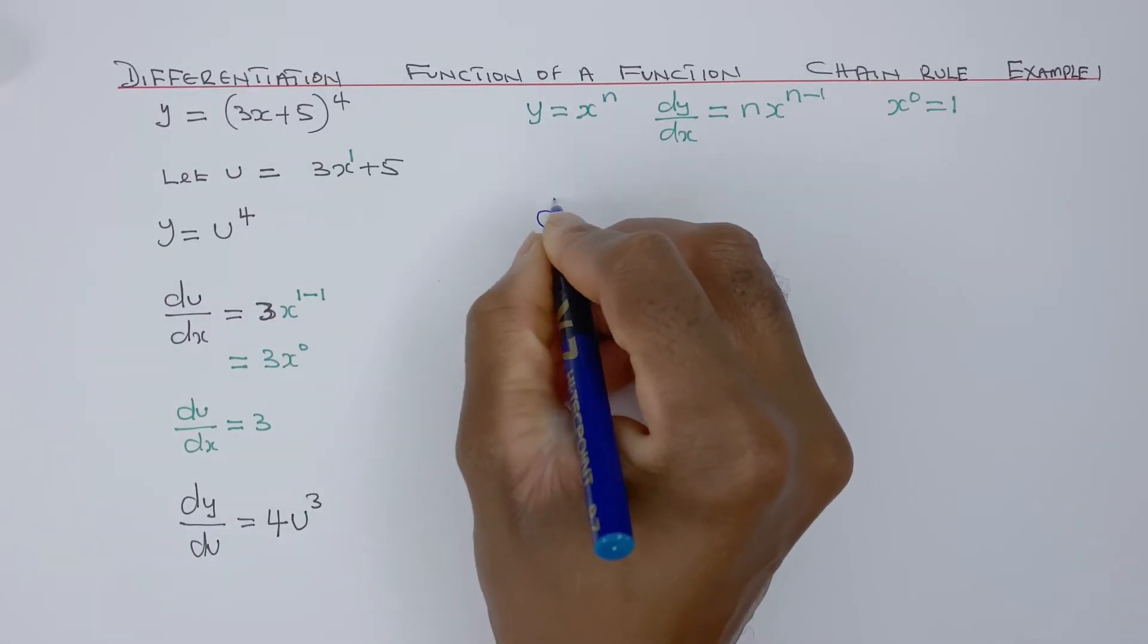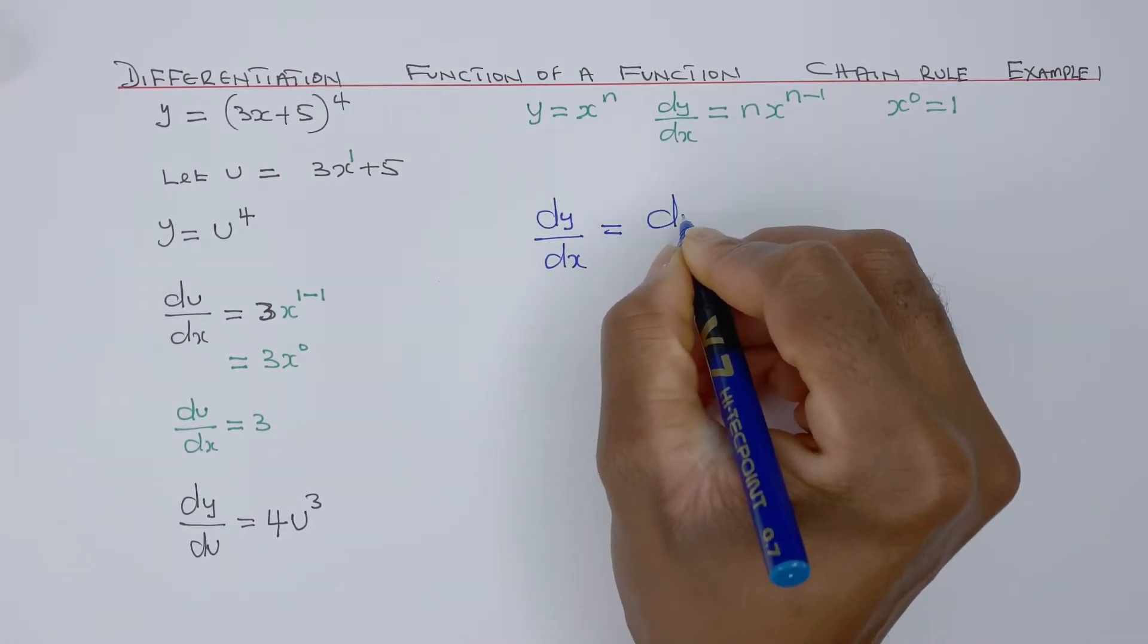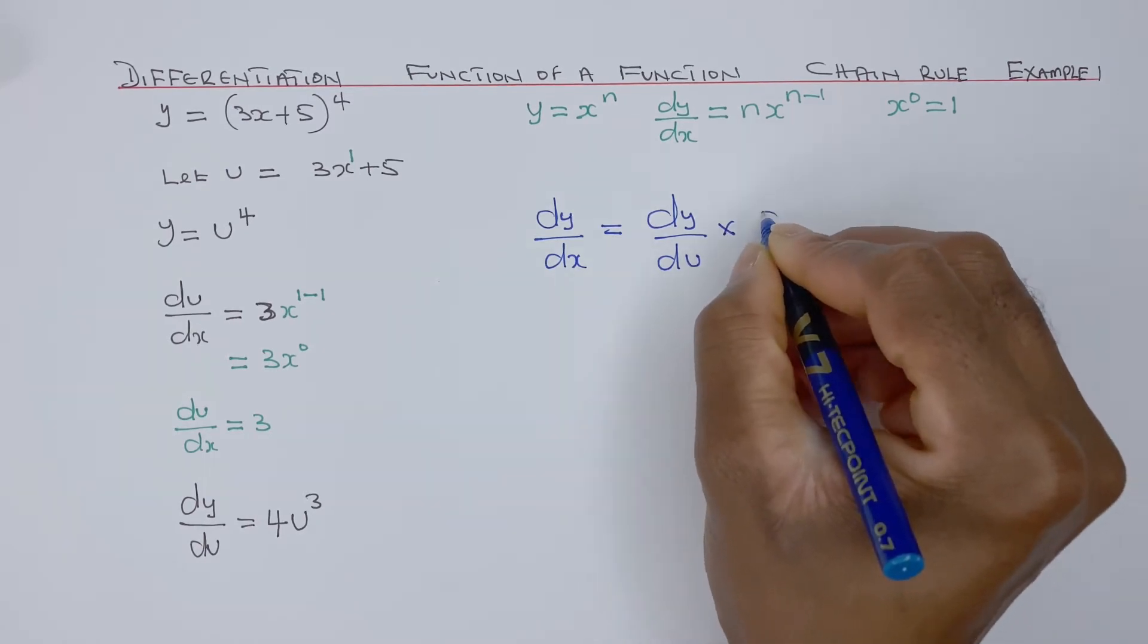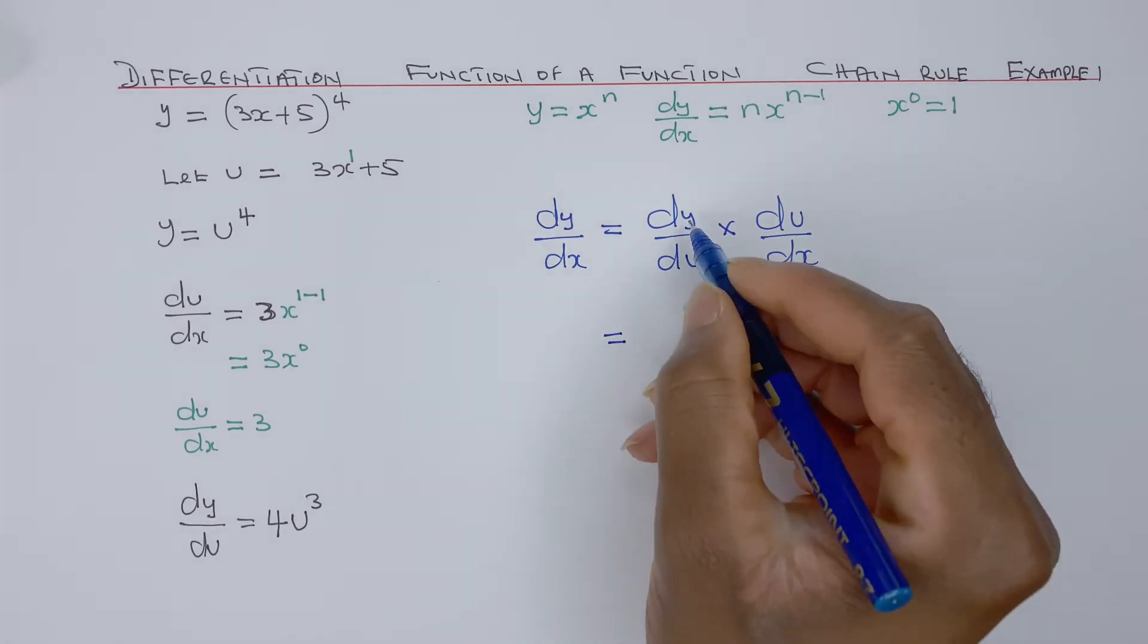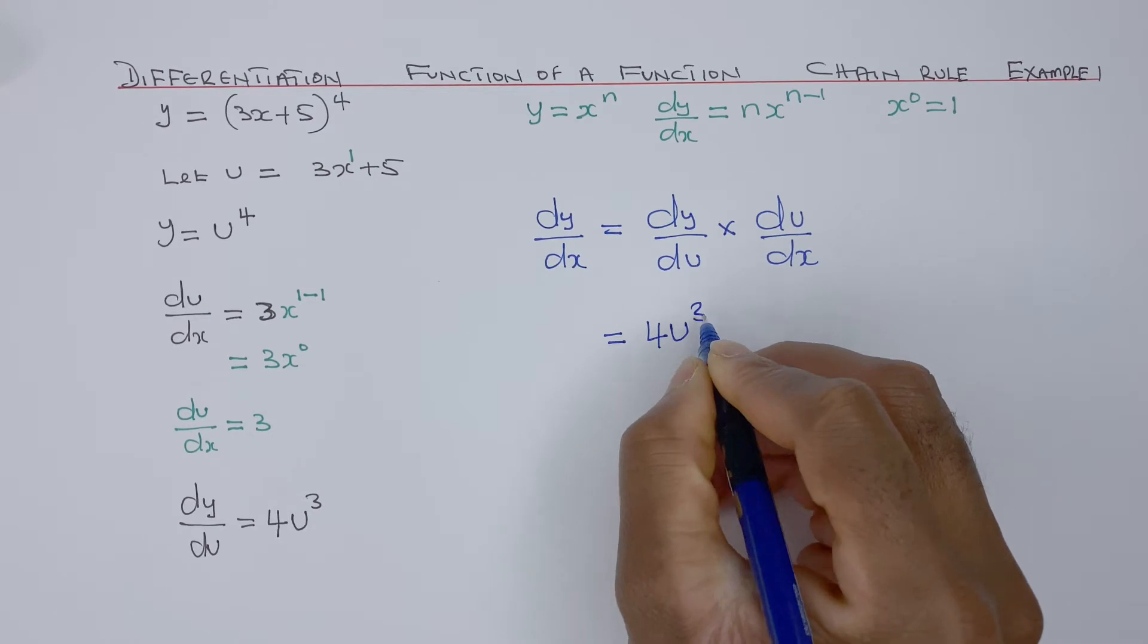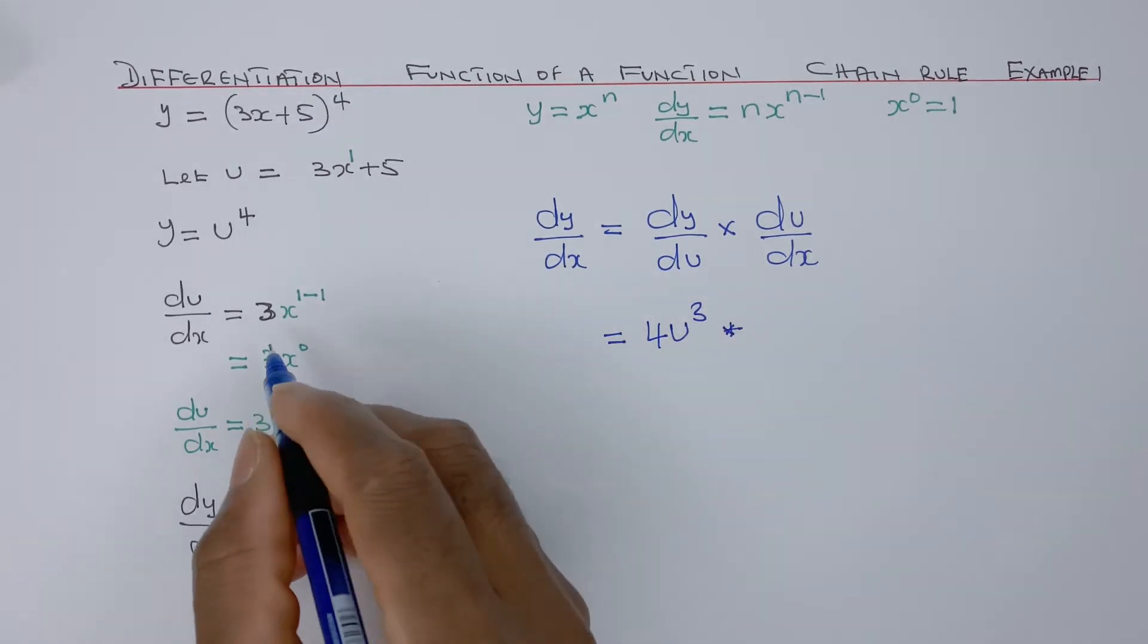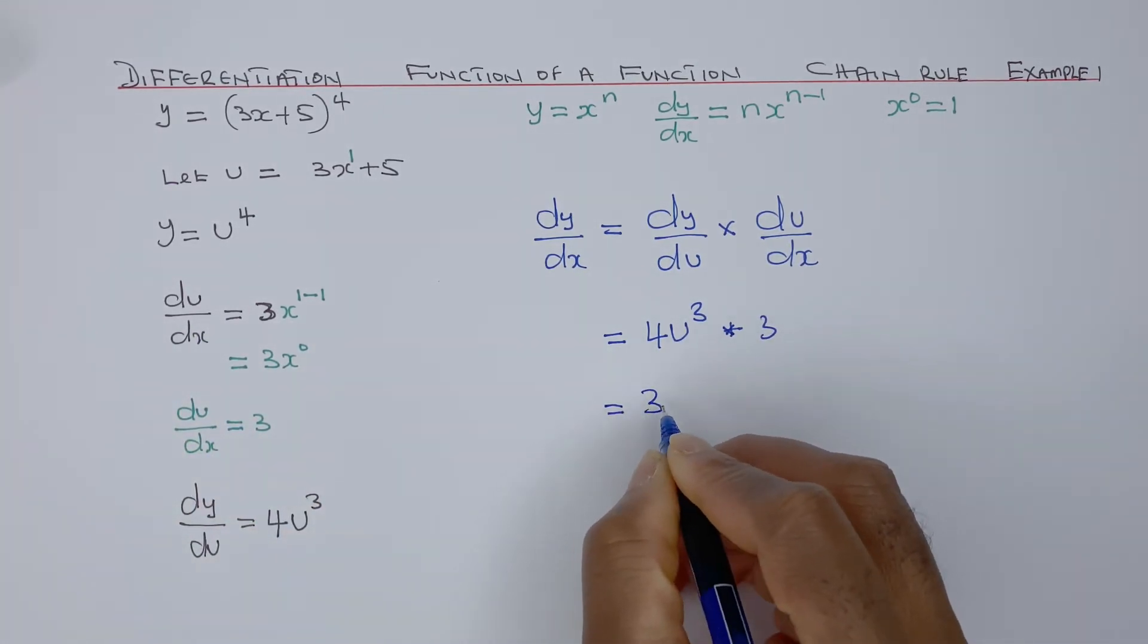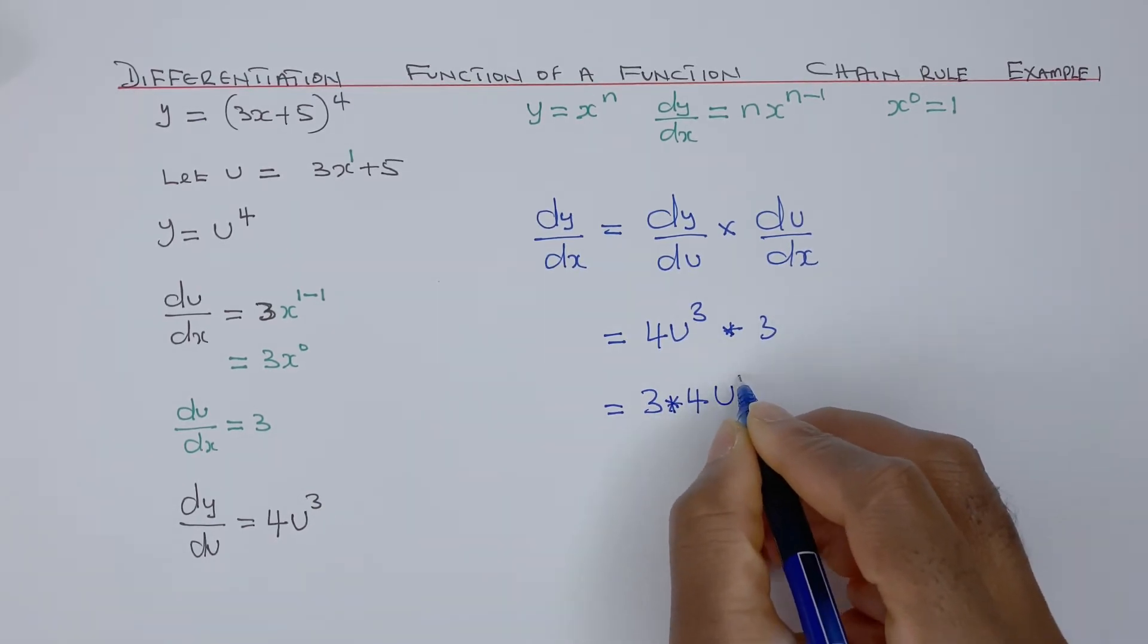Applying the chain rule, dy/dx equals dy/du times du/dx. We know dy/du is 4u to power 3 times du/dx. du/dx is 3, and that can be written as 3 times 4 times u to power 3.